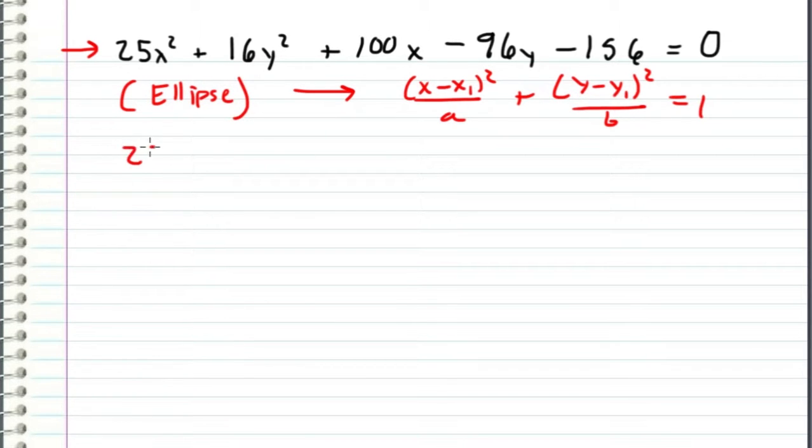So the first thing that I'm going to do is separate the x's from the y's. So I get 25x squared plus 100x plus 16y squared minus 96y is equal to 156.